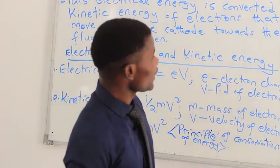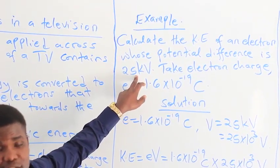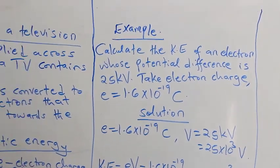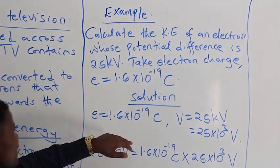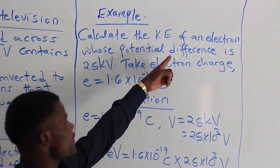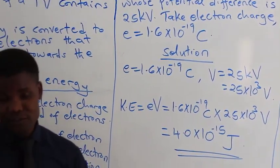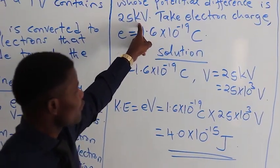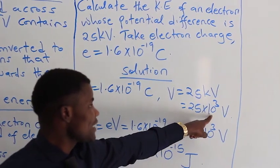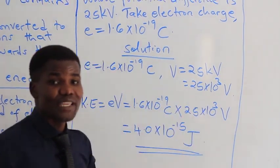Let us take an example. Calculate the kinetic energy of an electron whose potential difference V is 25 kilovolts. Take the electron charge to be 1.6 × 10⁻¹⁹ coulombs. What is given: e = 1.6 × 10⁻¹⁹ C, and the potential difference V = 25 kilovolts. The SI unit of potential difference is volts, not kilovolts, so we convert: 1 kilovolt = 1000 volts, so 25 kilovolts = 25 × 10³ volts.